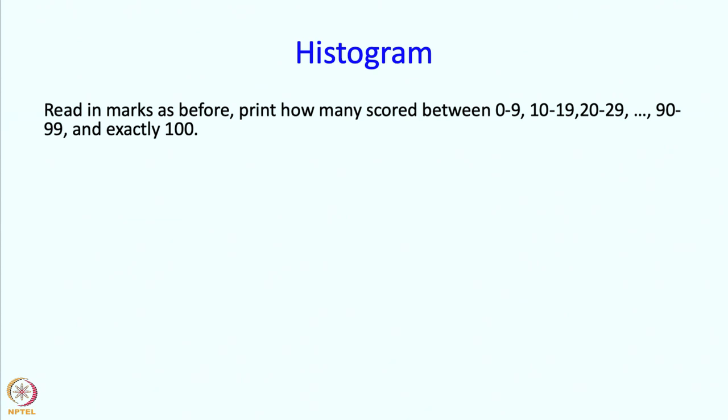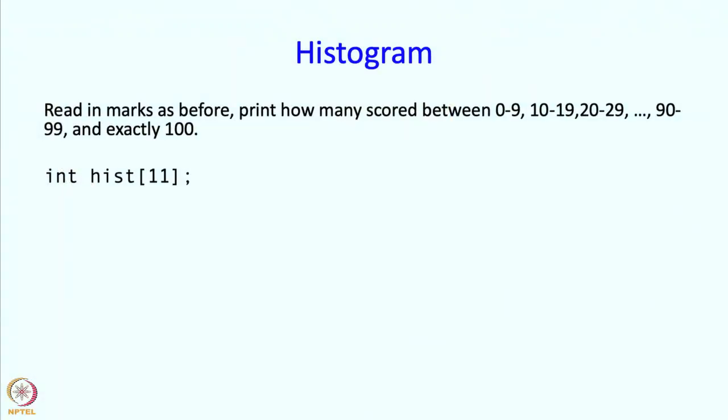This is often done by statisticians to get a general sense of how well people have scored. Rather than looking at every mark, which is lots of numbers, they break it up into ranges and see how many marks fall into the different ranges. In this case, our output is going to be 11 numbers: one for the range 0 through 9, another for 10 through 19, 20 through 29, all the way to 90 through 99, and also for the range starting at 100.